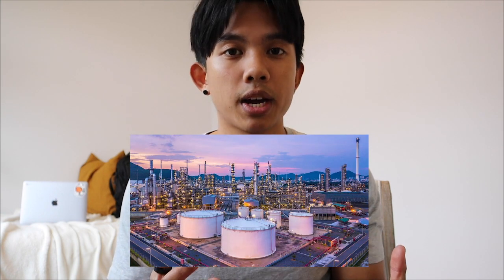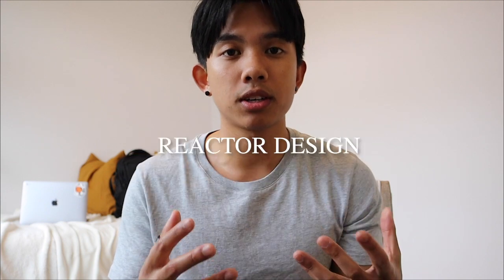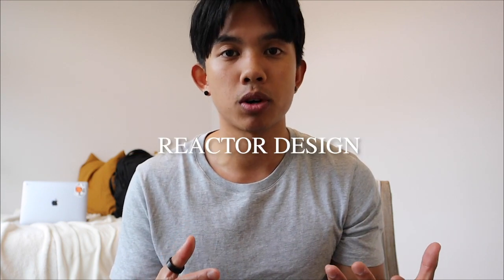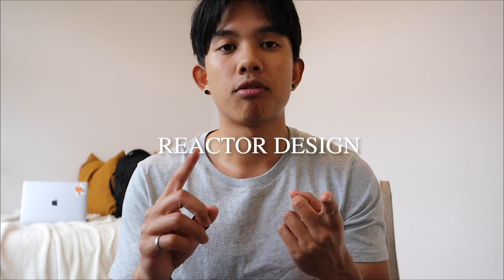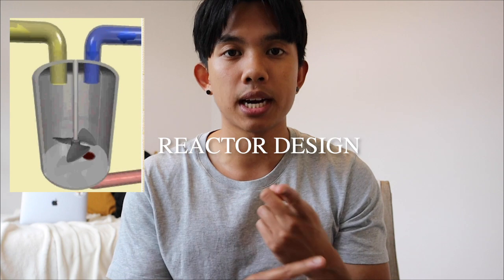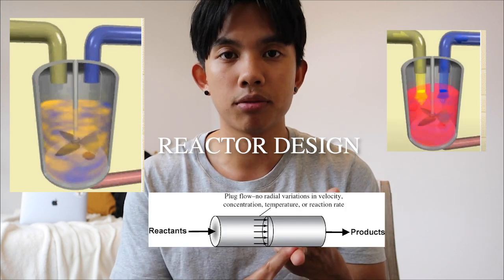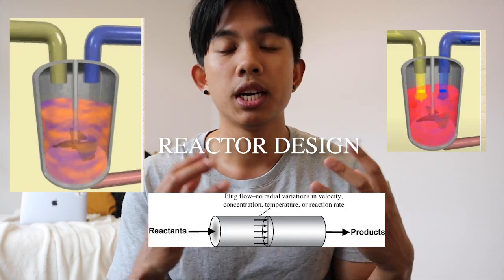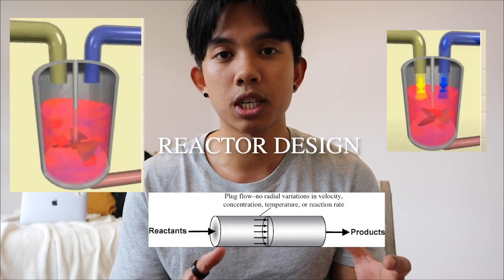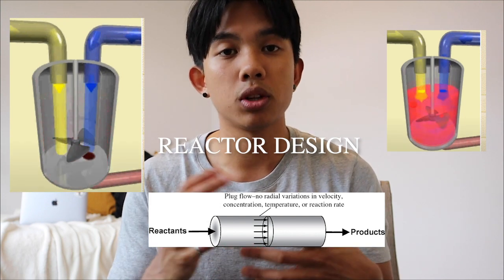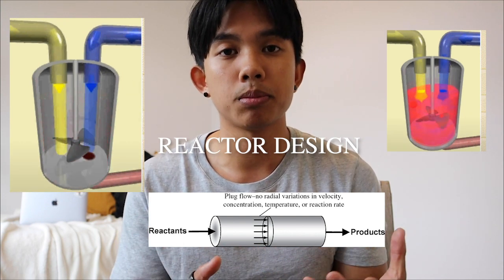At the core of every chemical process is a reactor. In reactor design you'll learn about the different equations governing chemical reactors — from batch reactors to continuously stirred reactors to plug flow reactors. Each of these can be applied to a different chemical process and you'll learn about how to optimize these different types of reactors.